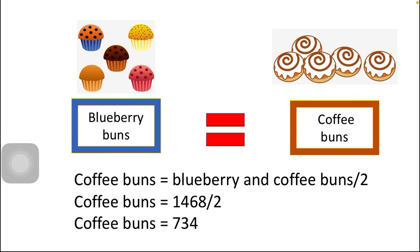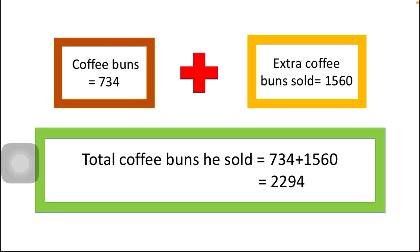The answer is 734, meaning 734 coffee buns are equal to the blueberry buns. Now for the final step, we add back the extra coffee buns: 734 plus 1560 equals 2294. So the total coffee buns the bakery sold is 2294.